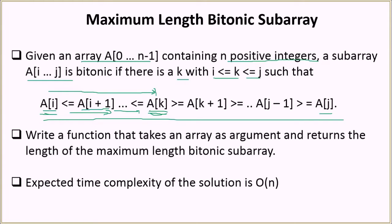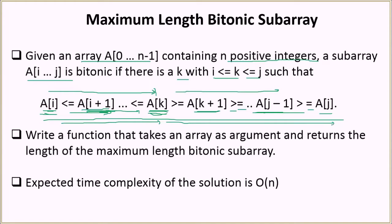After the element at index k, the elements start to either decrease or remain the same. If they are the same, we handle that with the equal-to sign; otherwise the next element is smaller than the previous. So we have to find a subarray that first increases to a maximum value and then starts to decrease. There could be multiple such subarrays in a given array, so we have to find the maximum length of such a subarray.